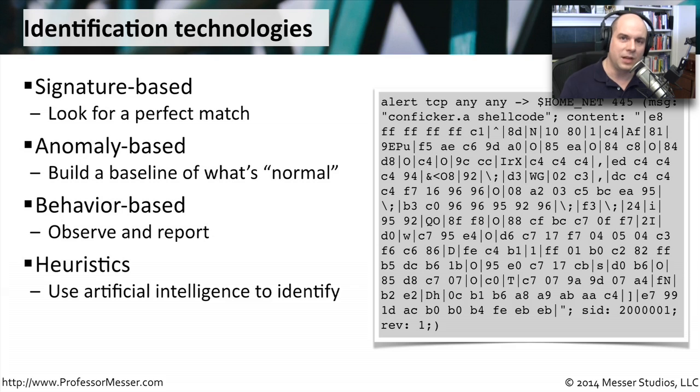Probably one of the most common beyond the signature-based forms of detection is one called heuristics. And this is really an emerging technology that we've had for a number of years, and we continue to make it better and better. Heuristics is a bit of artificial intelligence. We're seeing a type of traffic flow come into the network, and we'll watch it for a little bit and see if it changes.